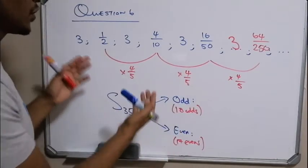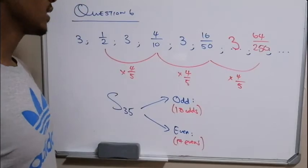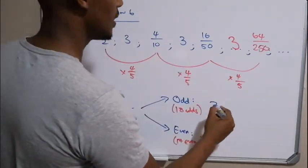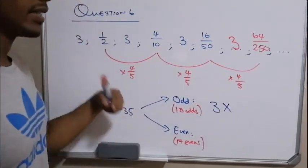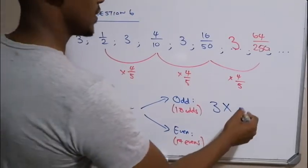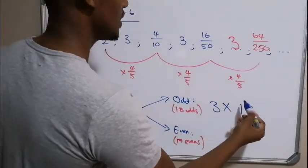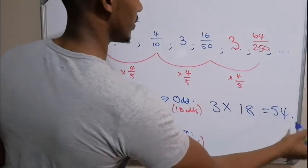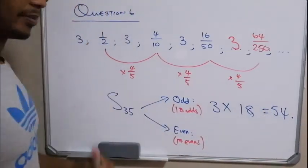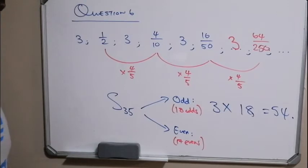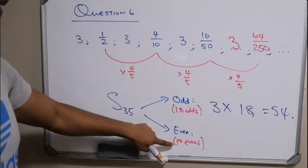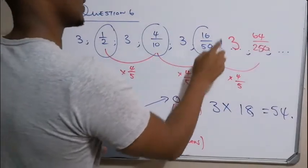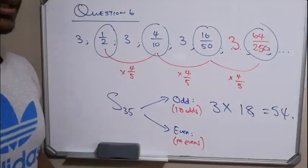So for our odd terms, if you just want to work out the sum, they are all 3s. You can just say 3 multiplied by the number of 3s there are. Since there are 18 threes, we say 3 multiplied by 18, and that gives you 54. Easy peasy. This one, however, is not so easy, because here we're dealing with fractions and they're all different.